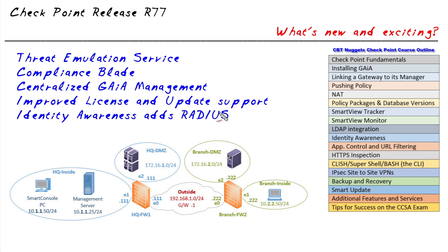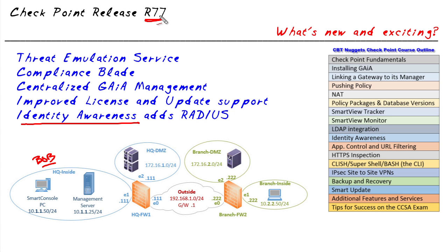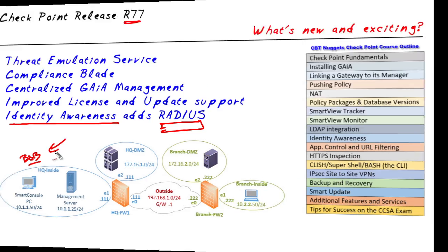Another feature Checkpoint offers is identity awareness, which allows you to set up rules to allow and track traffic based on user identity. For example, when Bob wants to access a website, you can control that based on his user ID, and in the log files you can search by who visited a site at a specific time. In R77, in addition to traditional methods like LDAP, you can now also use RADIUS as a source of identities for identity awareness.